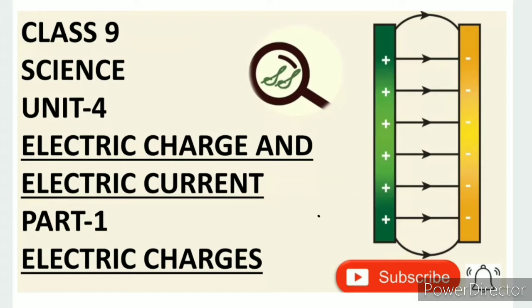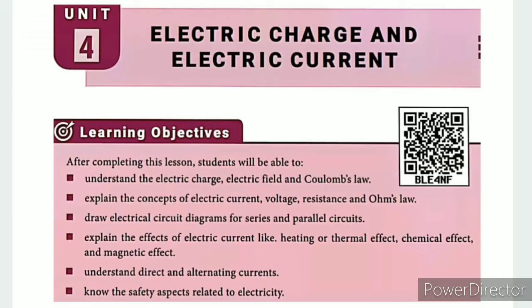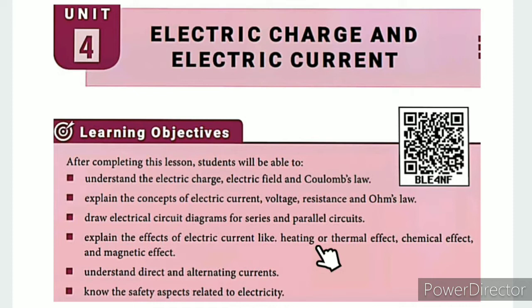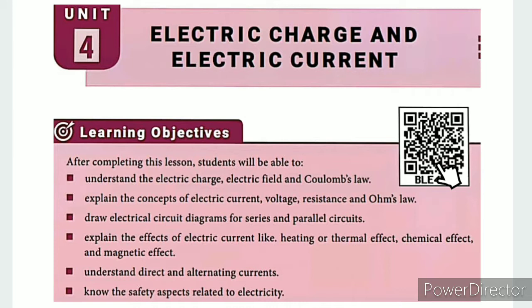From SS Class 9 Science, Unit 4: Electric Charge and Electric Current, Part 1 - Electric Charges. Learning objectives: understand electric charge, electric field, and Coulomb's law; explain the concepts of electric current, voltage, resistance, and Ohm's law; draw electric circuit diagrams for series and parallel circuits; explain the effects of electric current like heating, chemical, and magnetic effects; understand direct and alternating current; and know the safety aspects related to electricity.